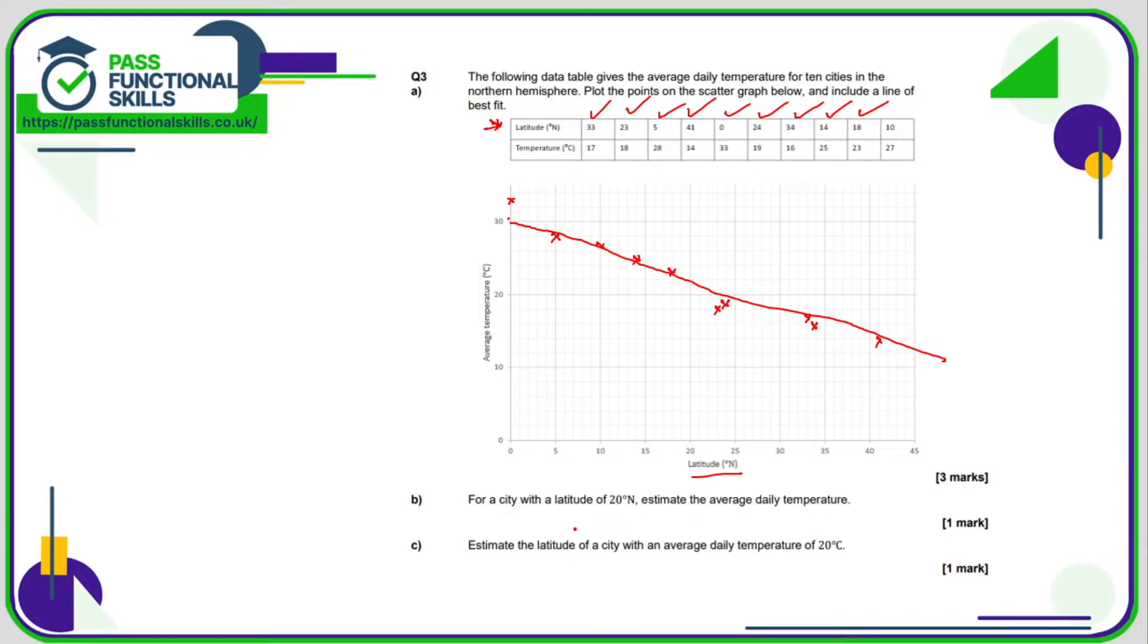Now we're going to use the line of best fit to work out other values that haven't been plotted. For a city with a latitude of 20, estimate the average daily temperature. So here's a latitude of 20, we're going to go up to the line and that correlates to 22 degrees Celsius. Usually in exams there's a bit of leeway because people do draw different lines of best fit.